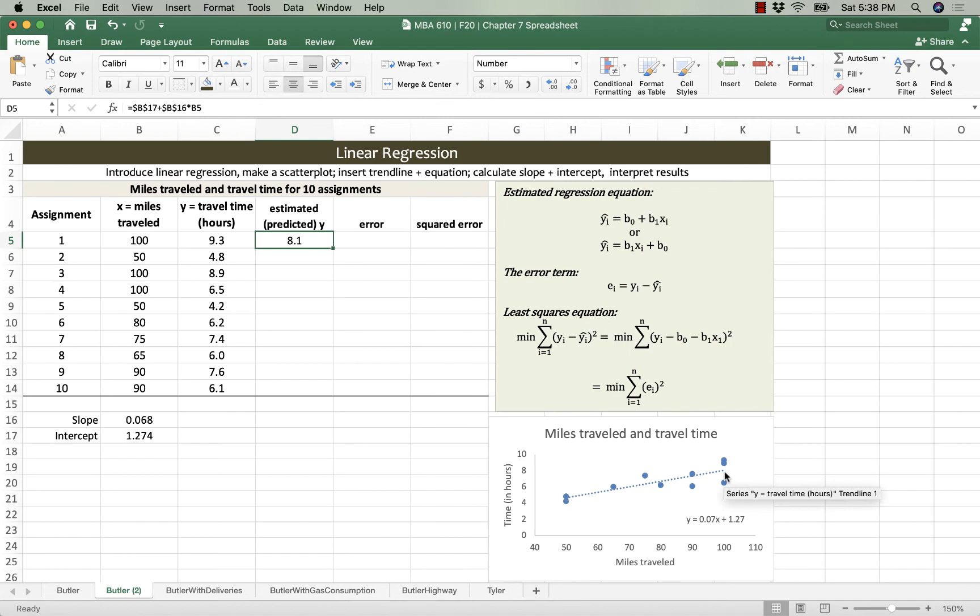For that first observation, the actual time traveled was 9.3 hours. You can see that point there is the uppermost dot, which means that we're off. We have a residual or an error that's equal to actual minus expected of 1.2. So we have an error of 1.2, which suggests that we underestimated the actual value by 1.2 hours. And if we square that, using shift 6 for the carrot, the 2 to say that we're squaring, that's an exponent of 2, our squared error is 1.55.